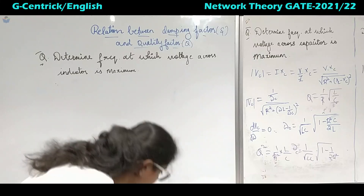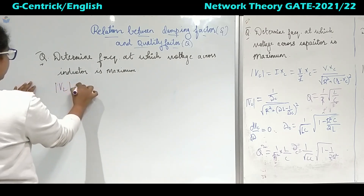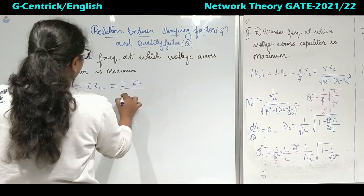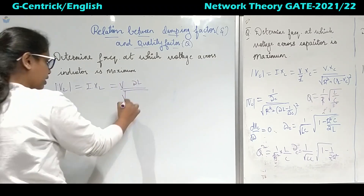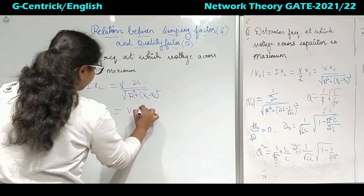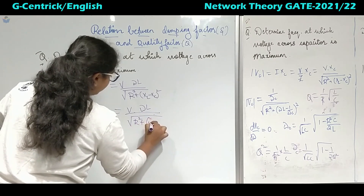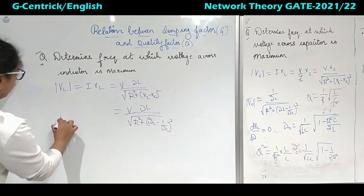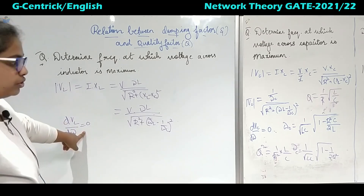Now for the second question, we have to find the maximum voltage across the inductor. We again know the formula: VL equals I into XL, where XL equals omega L. Writing I as V by Z, and Z as under root of R squared plus (XL minus XC) whole squared, we substitute to get R squared plus (omega L minus 1/omega C) whole squared.